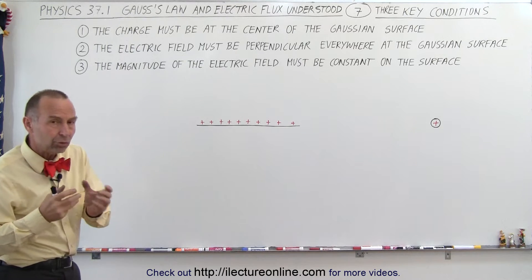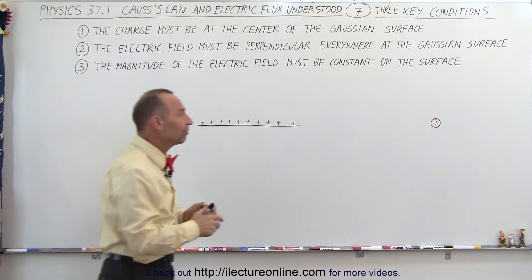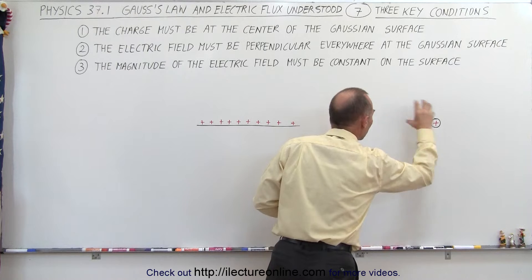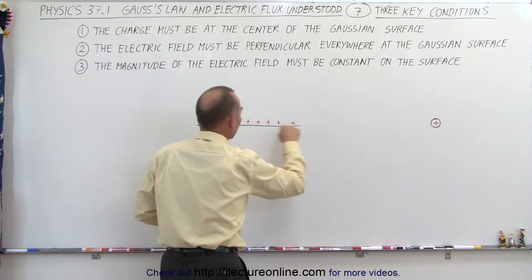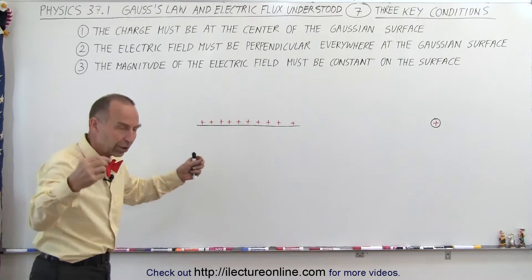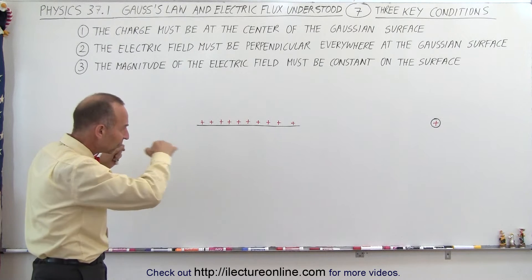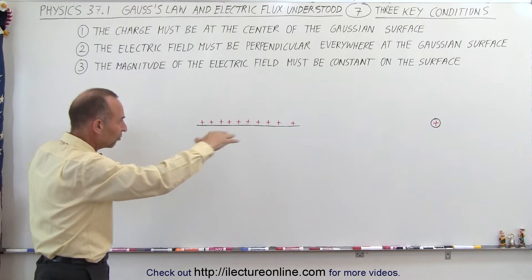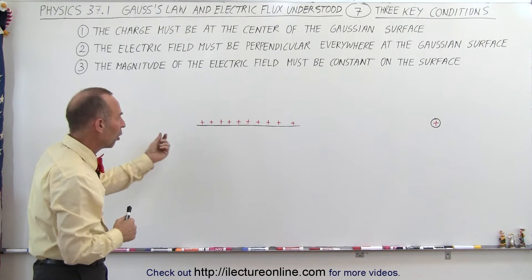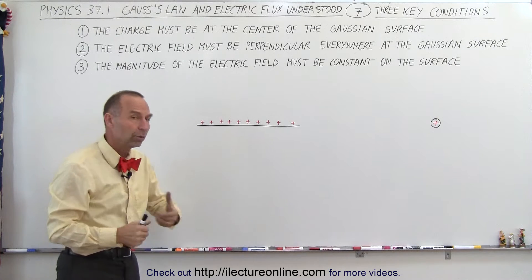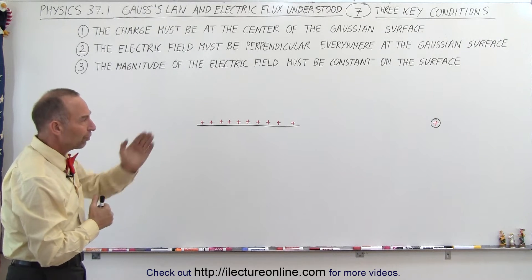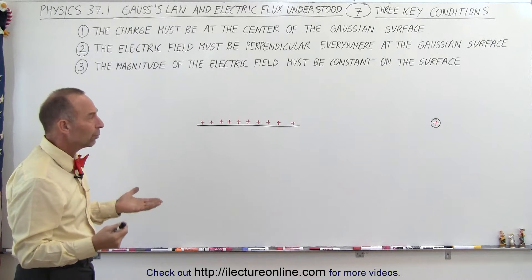So here we have two different kinds of charge distributions. We have a single point charge here, and here we have a line charge — a conductor that has extra charge on it, so it distributes itself right along the line of that conductor, and all the charges will be equally spaced. First we'll go to the one we're most familiar with.